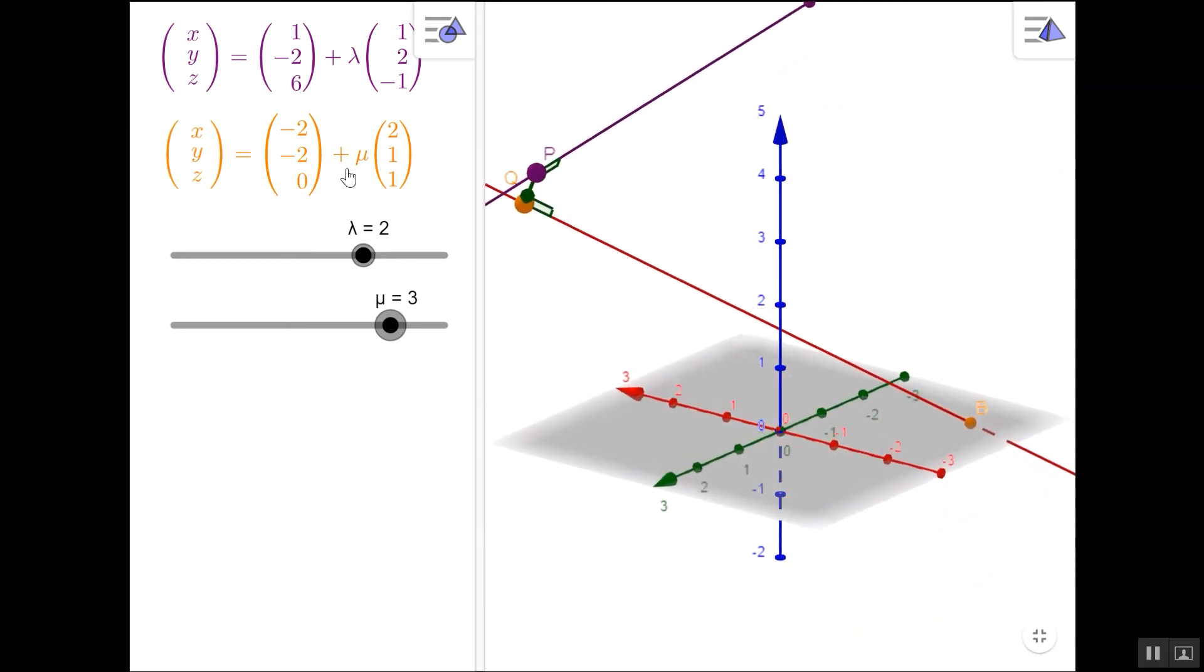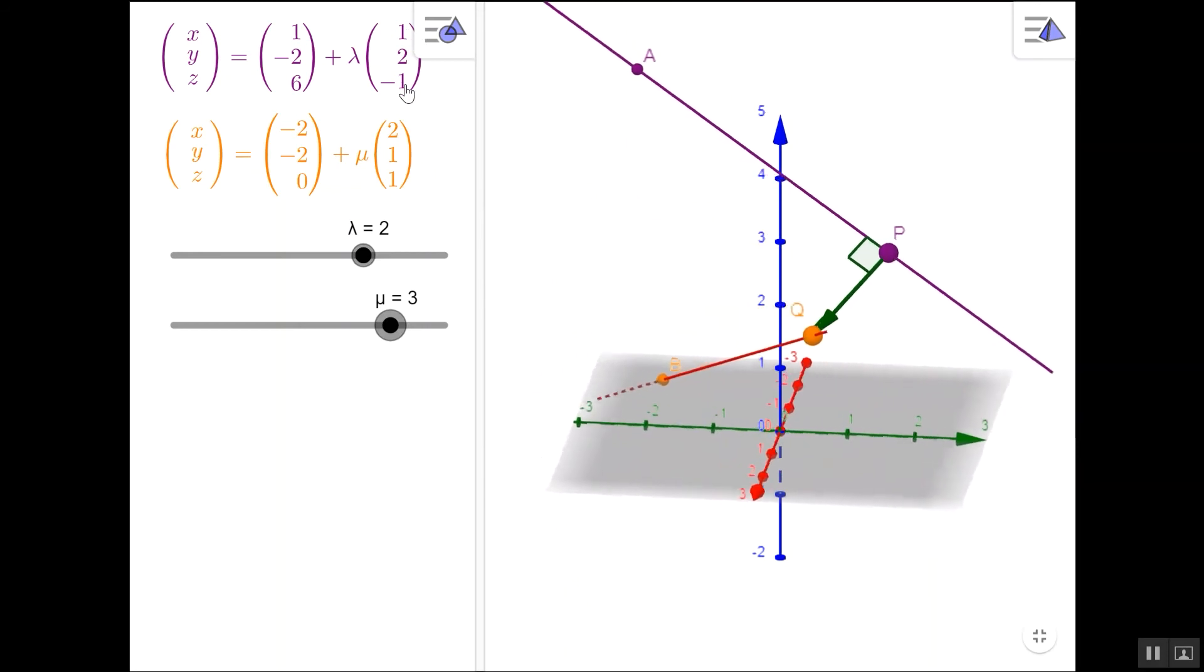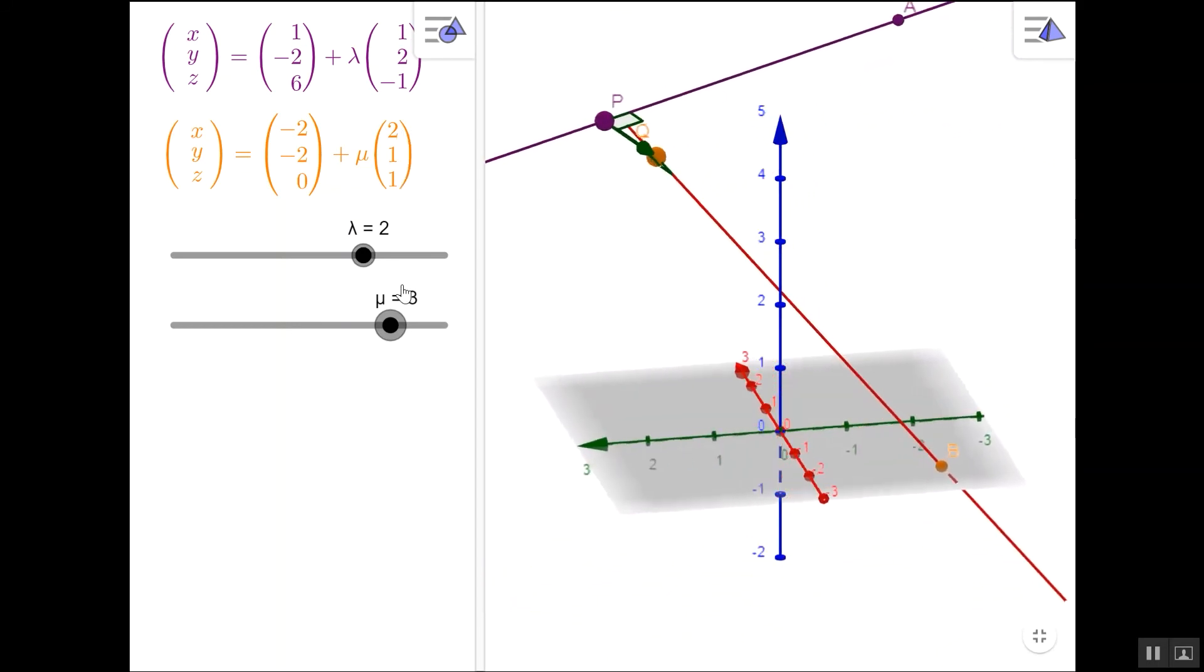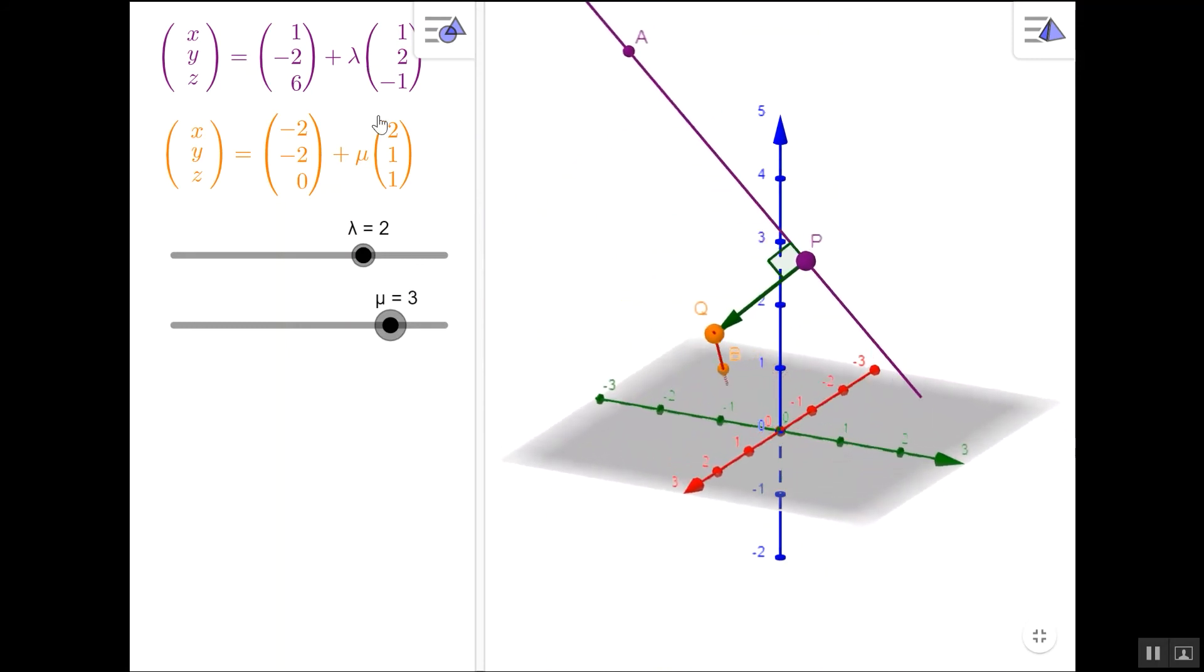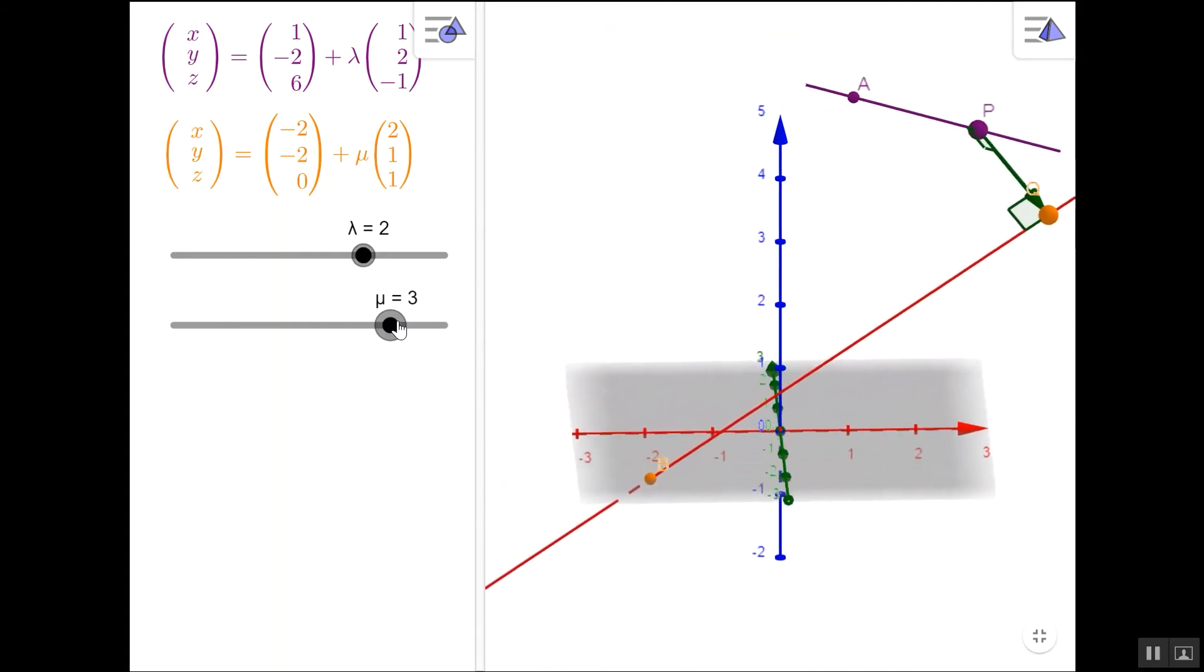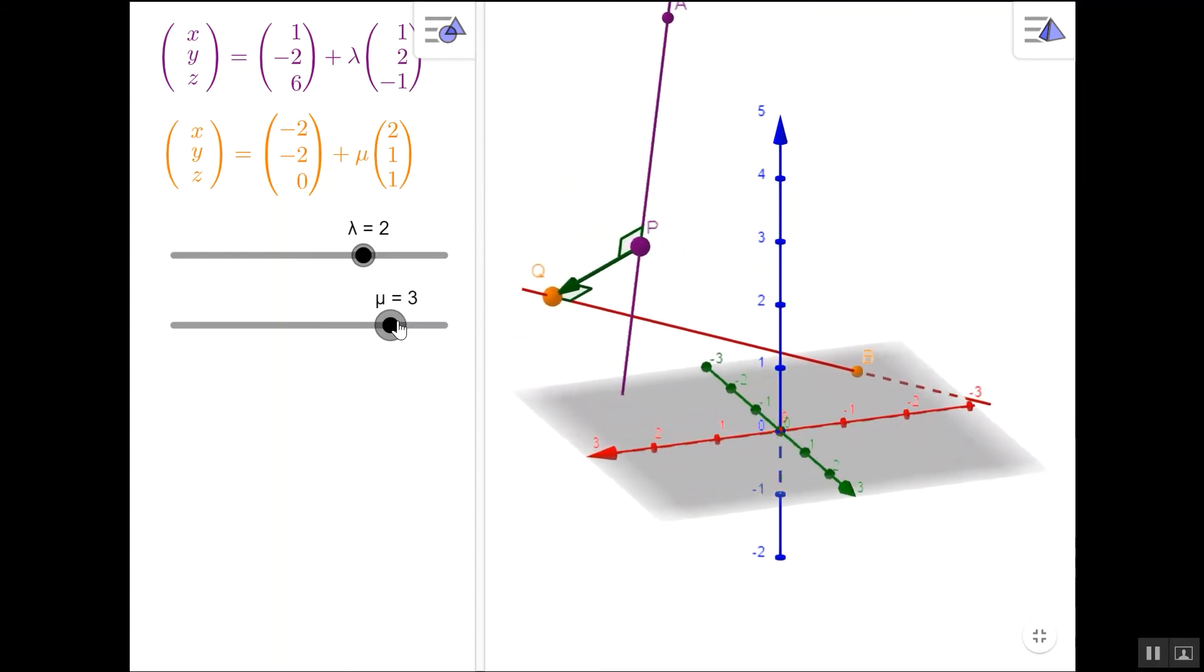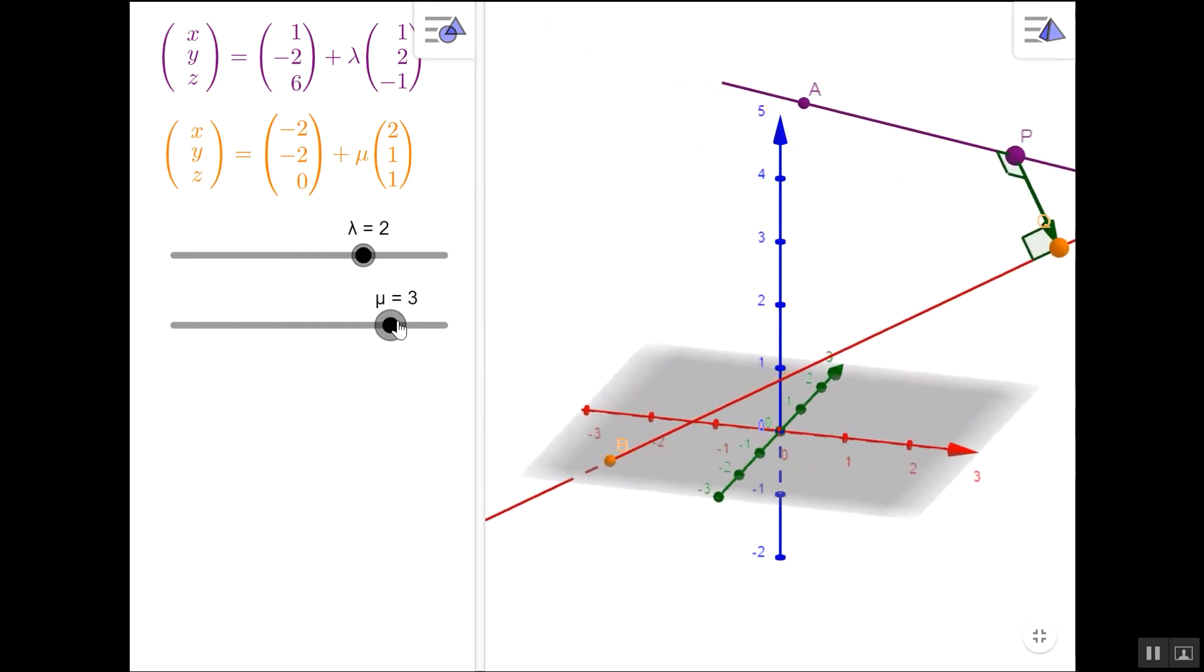The dot product of that multiplied by the vector (1, 2, -1) should be 0 because it's perpendicular to the purple line, and the dot product of that lengthy expression multiplied by (2, 1, 1) should also be 0. I get two equations in Lambda and Mu and I can solve them simultaneously to find those values. It takes quite a lot of working, but the whole point of this dynamic view is it gives us a sense of where we're going with this. We can see what we're trying to achieve is if we can write a general form of a vector PQ between the two lines, we can work out specific values of Lambda and Mu that would mean that PQ was perpendicular to both the purple and the orange line.